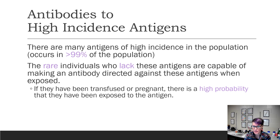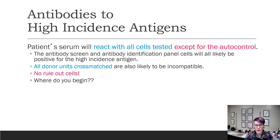The rare people that lack these antigens are capable of making an antibody when exposed. So if they've been transfused or pregnant, there's a higher probability that they have been exposed to the antigen. Antibodies to a high frequency antigen will react with all cells tested except for the autocontrol. The autocontrol being negative is going to key you in to it being an alloantibody rather than an autoantibody.